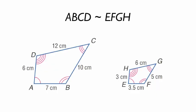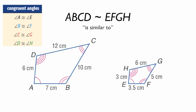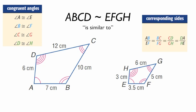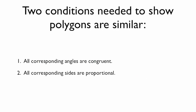If we say quadrilateral ABCD is similar to EFGH, then all the angles must be congruent: A congruent to E, B congruent to F, C congruent to G, D congruent to H. And all the sides are proportional. In other words, AB divided by EF must equal BC divided by FG, which must equal CD divided by GH, which must equal DA divided by HE. In this case, 7 divided by 3.5 equals 10 divided by 5 equals 12 divided by 6 equals 6 divided by 3.